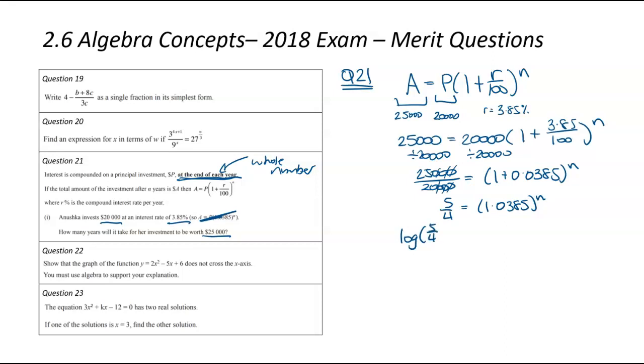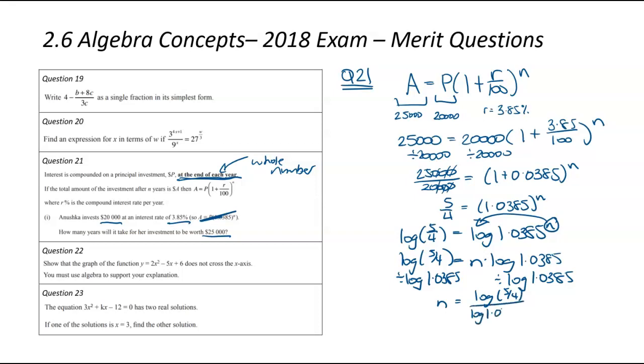So we're going to have log(5/4) equals log(1.0385)^n. I'm going to move my unknown power to the front. So that means n times log(1.0385) will be equal to log(5/4). I'm now going to divide this. So this log is currently a multiplication. Let's get rid of it by dividing it. And that will leave n by itself. So that's going to be n equals log(5/4) divided by log(1.0385).